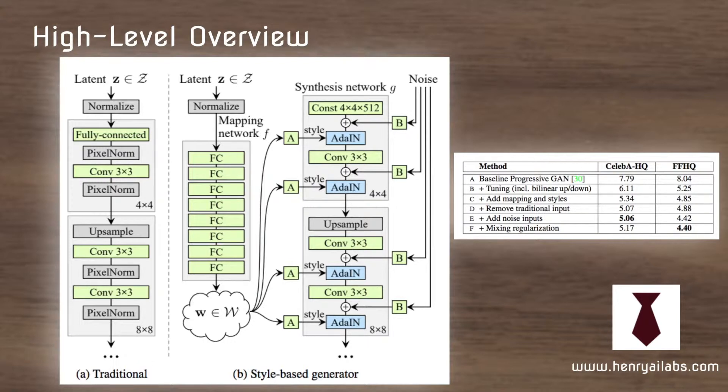So the first change they do is instead of feeding the latent code Z to start the upsampling process they start from a learned constant value. And the way that the Z vector is used is it is processed in this eight fully connected layer mapping network to this W space and the W space controls the mean and variance parameters of the adaptive instance normalization which we'll cover the details of that next in the video.